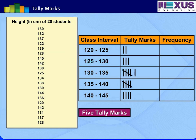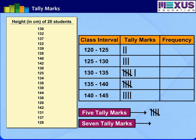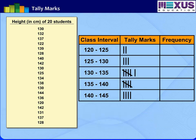If five tally marks are to be made, we mark four tally marks first and the fifth one across them in this way, so that it represents a cluster of five tally marks. To represent seven, we use a cluster of five tally marks and then add two more tally marks beside it as shown. Finally, count the tally marks and enter the number of marks as the frequency in the frequency column.